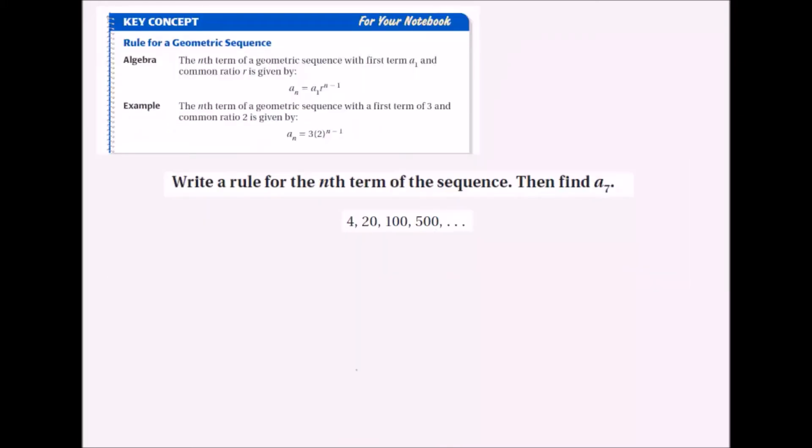It says, write a rule for the nth term of the sequence and find a_7. So first we've got to check that it's a geometric sequence. We'll do that by finding the ratio. 20 over 4 is 5, 100 over 20 is 5, 500 over 100 is 5. We know this is geometric. We know that the ratio is equal to 5, because that's what we get when we divide those terms.